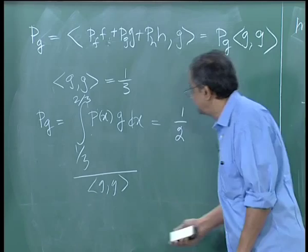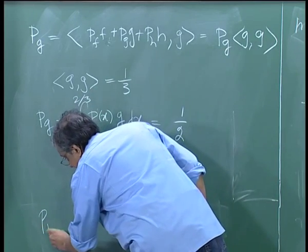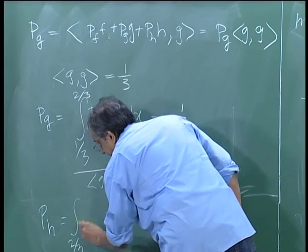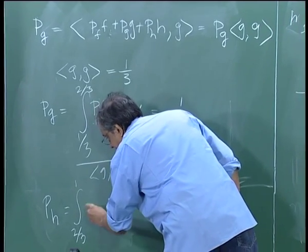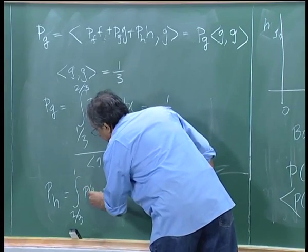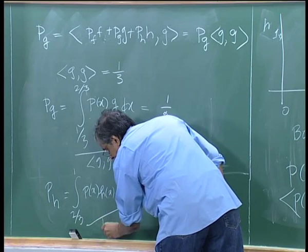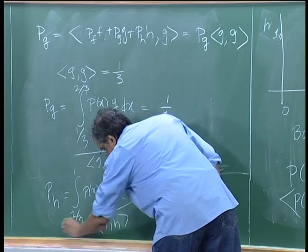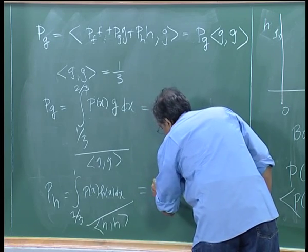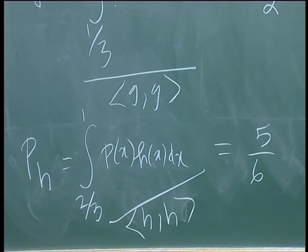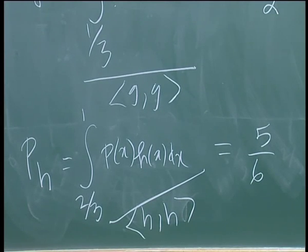And ph similarly — integrate p(x)·h(x) between 2/3 and 1, then divide by ⟨h, h⟩. You can verify that this gives 5/6. If you are wondering how I know the answer, it just basically comes from symmetry: this is about 1/6 away from 1.